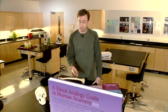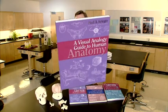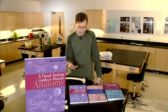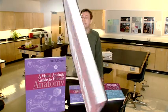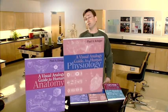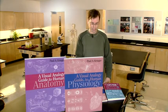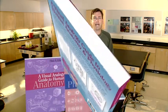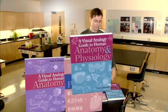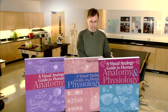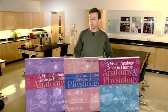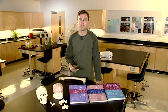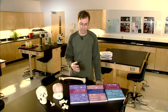The first that I wrote and illustrated is a Visual Analogy Guide to Human Anatomy, which covers structure of the human body. The second was a Visual Analogy Guide to Human Physiology, covering function. The third was a Visual Analogy Guide to Human Anatomy and Physiology, which is an integration of the first two books. Let's look at a few examples to see what we did to make things simpler and more memorable for students.